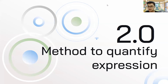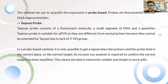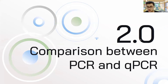The method we use to quantify expression is probe-based, where probes are fluorescently labeled DNA oligonucleotides. The probe we chose is the TaqMan probe, which consists of a fluorescent molecule, a small segment of DNA, and a quencher. TaqMan probes are suitable for qPCR as they cannot be extended by Taq polymerase due to the lack of a 3'-OH group. In a probe-based method, a signal is only generated when both primers and probe bind to the correct target, so no post-run analysis is needed to confirm the correct target has been amplified, making the data reliable and simple to work with.